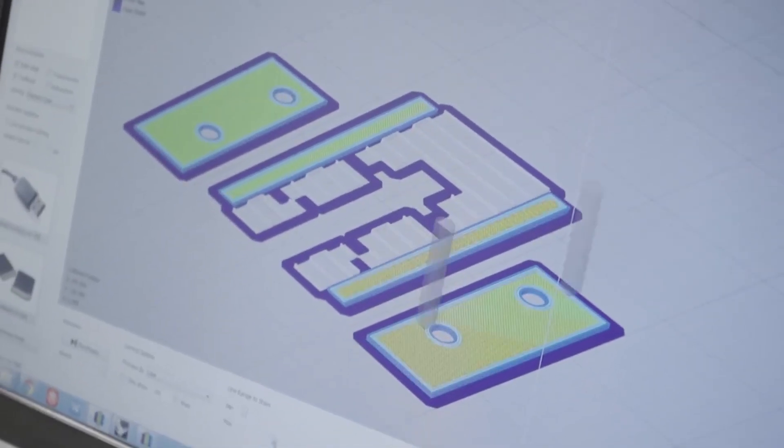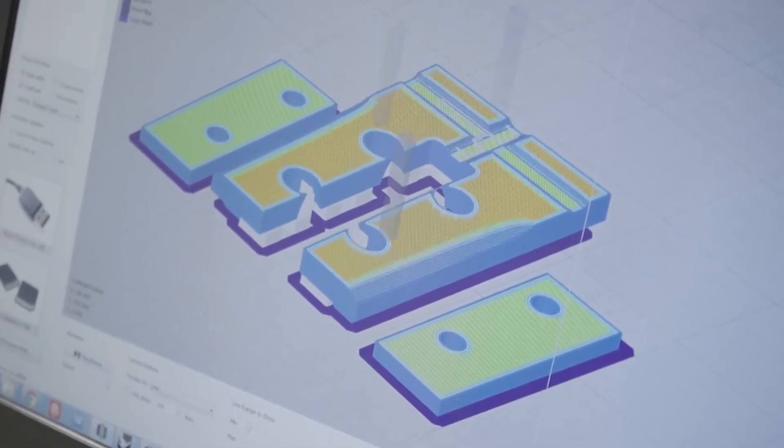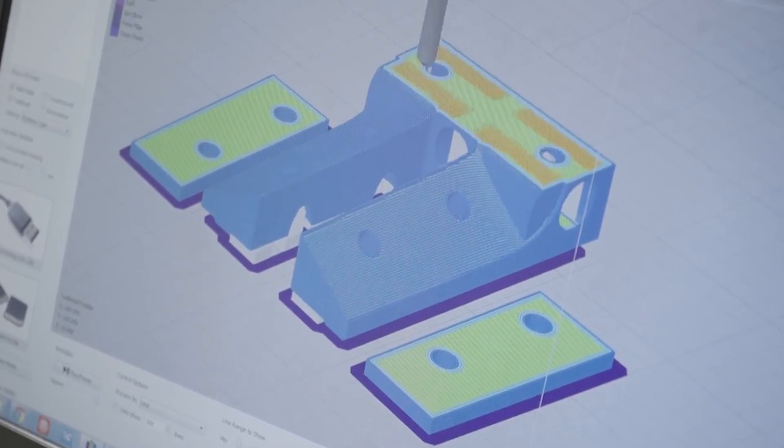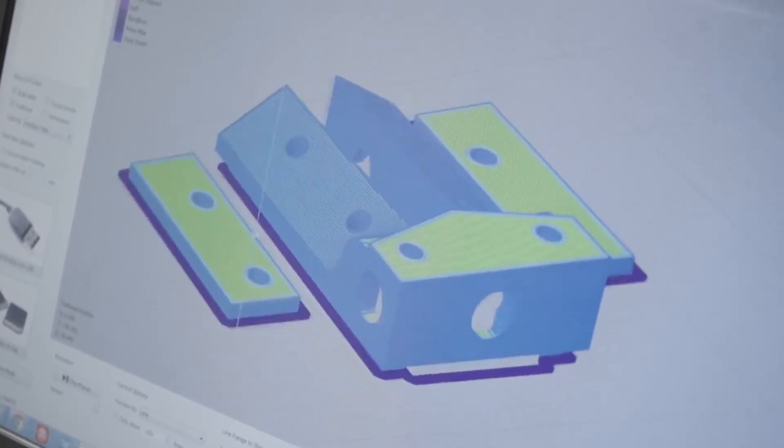We took it over to Simplify3D which is a slicer software used to prepare files for 3D printing. In Simplify3D we were able to adjust the parameters of the physical print that we were going to create to find the right amount of material and infill that would give that squeegee mount the right flexibility while also the strength in order to process the films that Mark was running through his film processor.